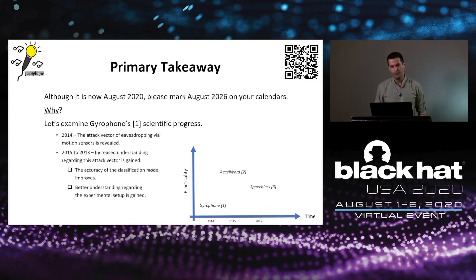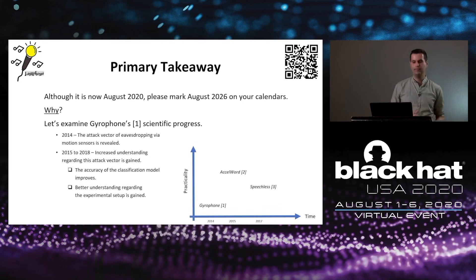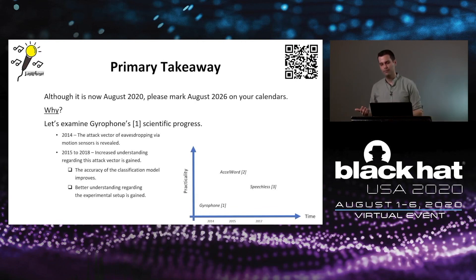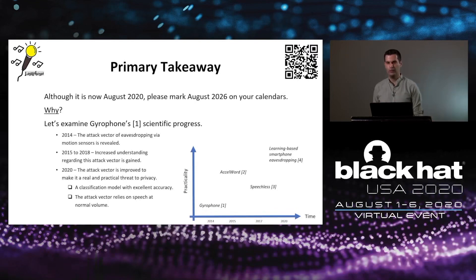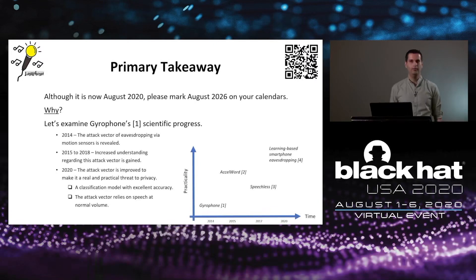Between 2015 and 2018, understanding of this attack vector improved, classification accuracy improved, and some studies suggested using an accelerometer instead of a gyroscope — optimizing practicality to somewhere in the middle. On 2020, at NDSS, a group of scientists showed how the attack vector could be further improved with excellent classification accuracy and at normal volume of speech rather than high volume, making it a real and practical threat to privacy.